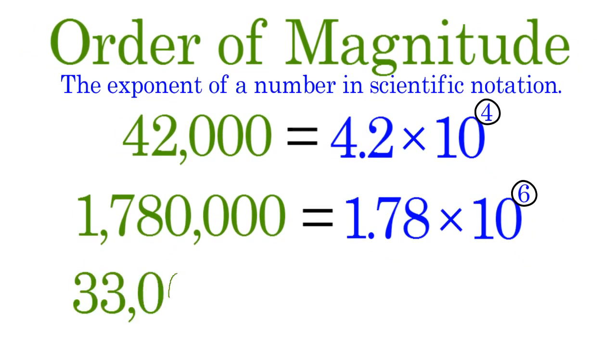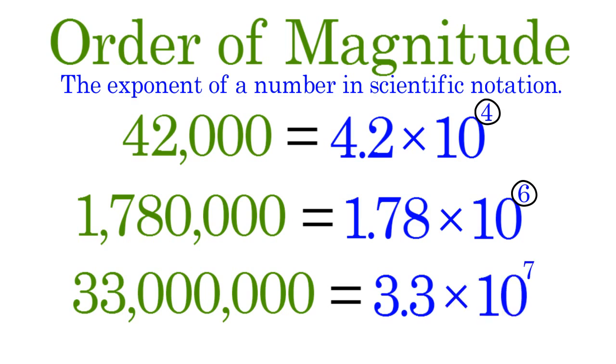And 33,000,000 equals 3.3 times 10 to the seventh power, so this number has an order of magnitude of 7. Notice that the order of magnitude is a compact way to express the approximate size of a number.